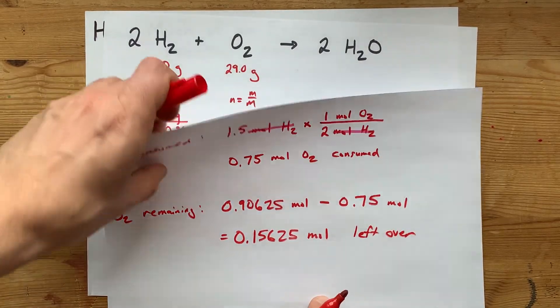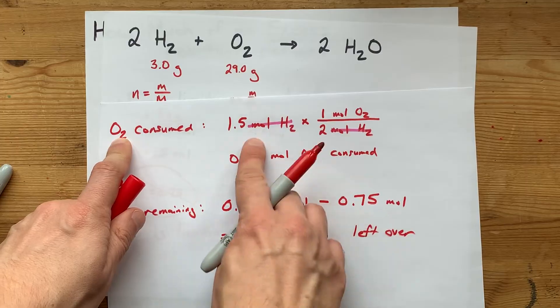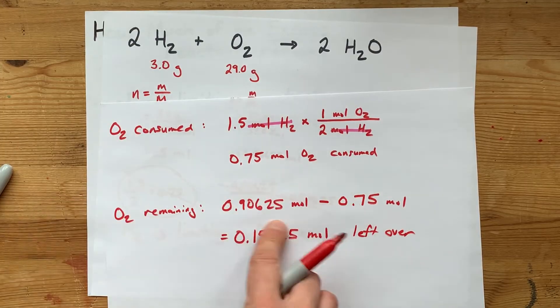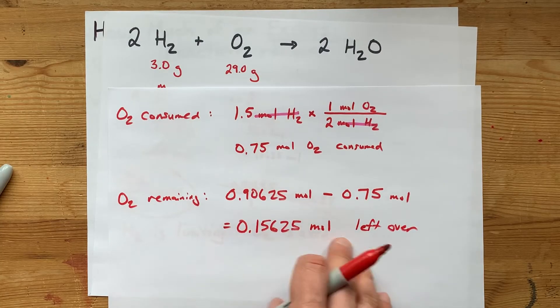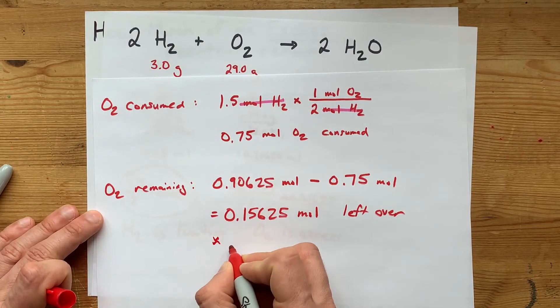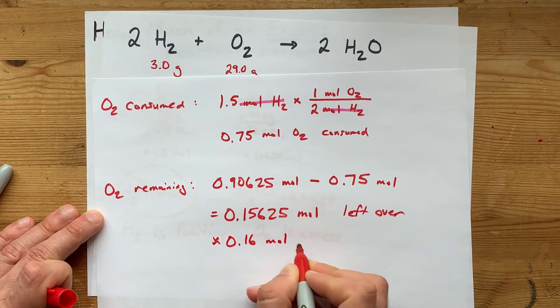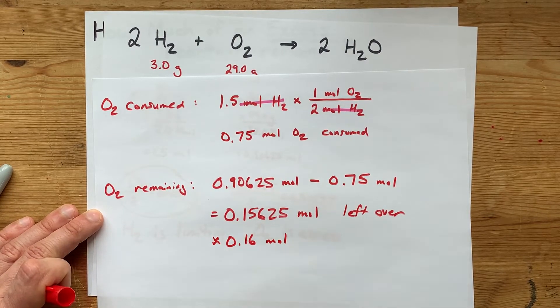Again, you had to find the limiting reactant, figure out how much of the other reactant was actually used, and take that away from the starting amount. This is your final answer. Although if you were trying to do sig figs, significant digits, you'd have to say it was about 0.16 moles left over.